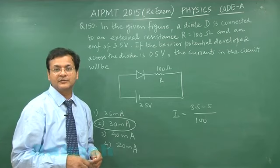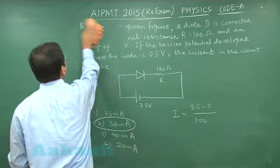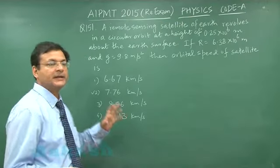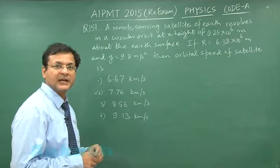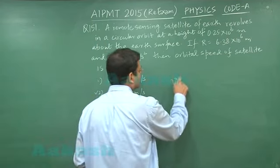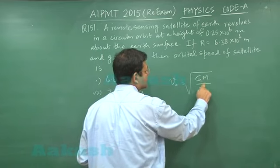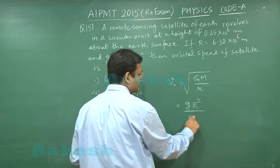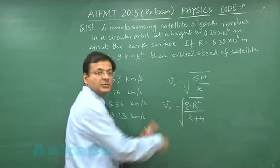Switch over to next question, that is 151. Now in this next question which is based on direct formula used for satellite orbital speed. Orbital speed formula, if you remember, this is under root GM by r, and this GM can successfully be replaced by g r square, and this can be r plus h. These are some of the manipulations you can make.